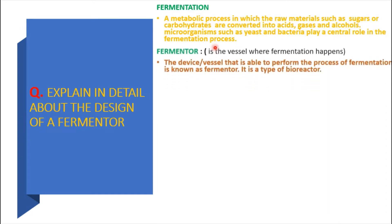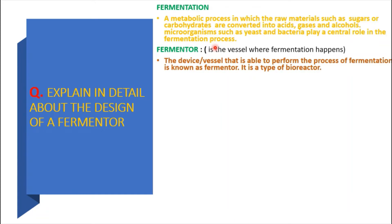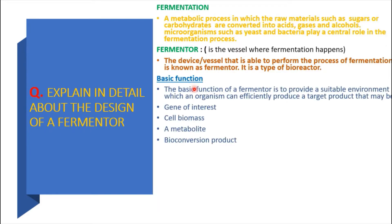What is meant by a fermenter? A fermenter is nothing but the vessel or a device in which the fermentation process is going to occur. Simply, it is a vessel where the fermentation process happens, and this fermenter is a type of bioreactor. Any fermenter should provide a suitable environment in which the organisms can efficiently produce the target product — which may be a gene of interest, cell biomass, a metabolite, or any bioconversion product.